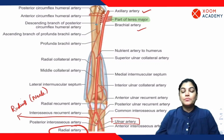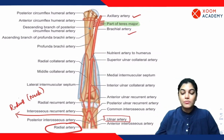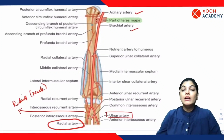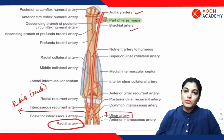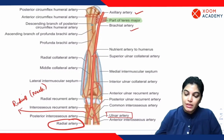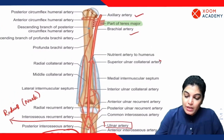It is important to know the branches of the brachial artery so that you can understand the topic of elbow anastomosis. One important branch is the nutrient artery to the humerus bone.